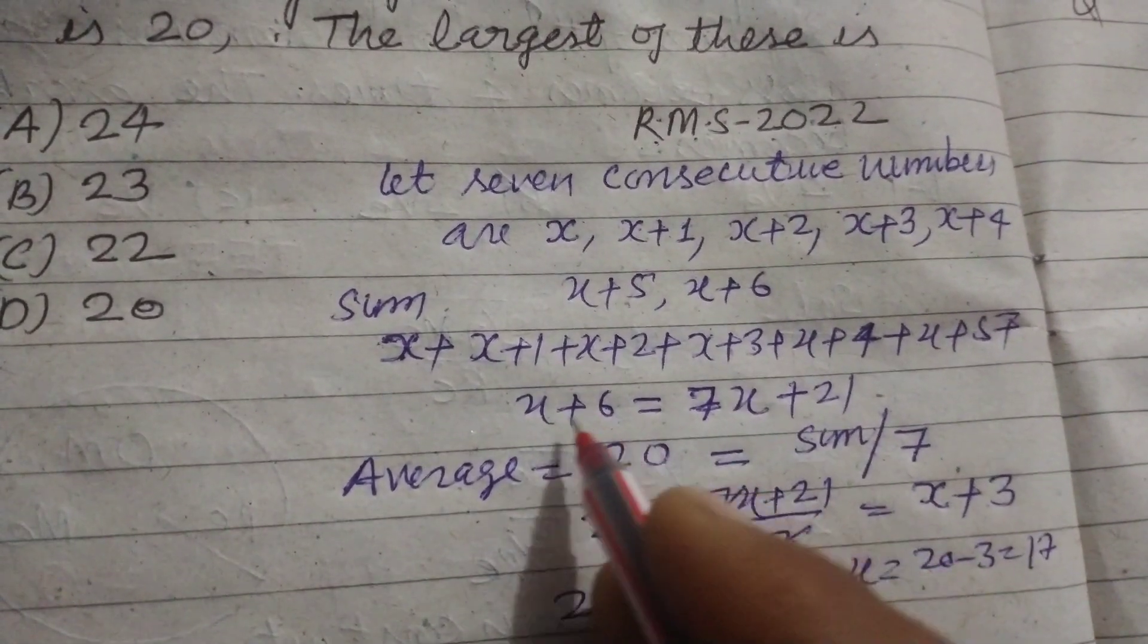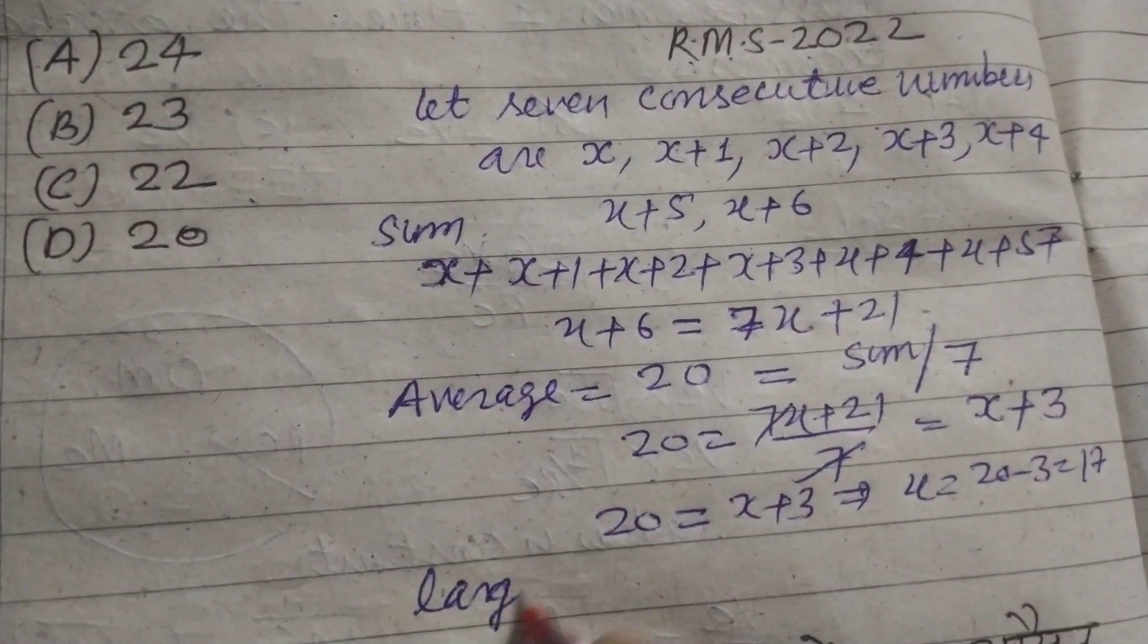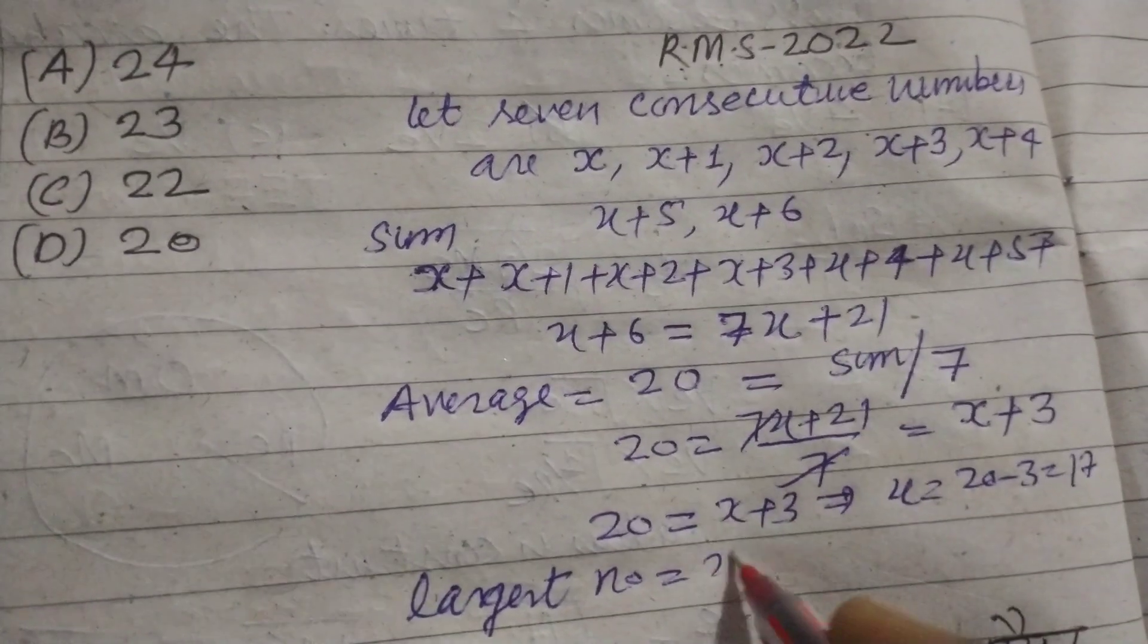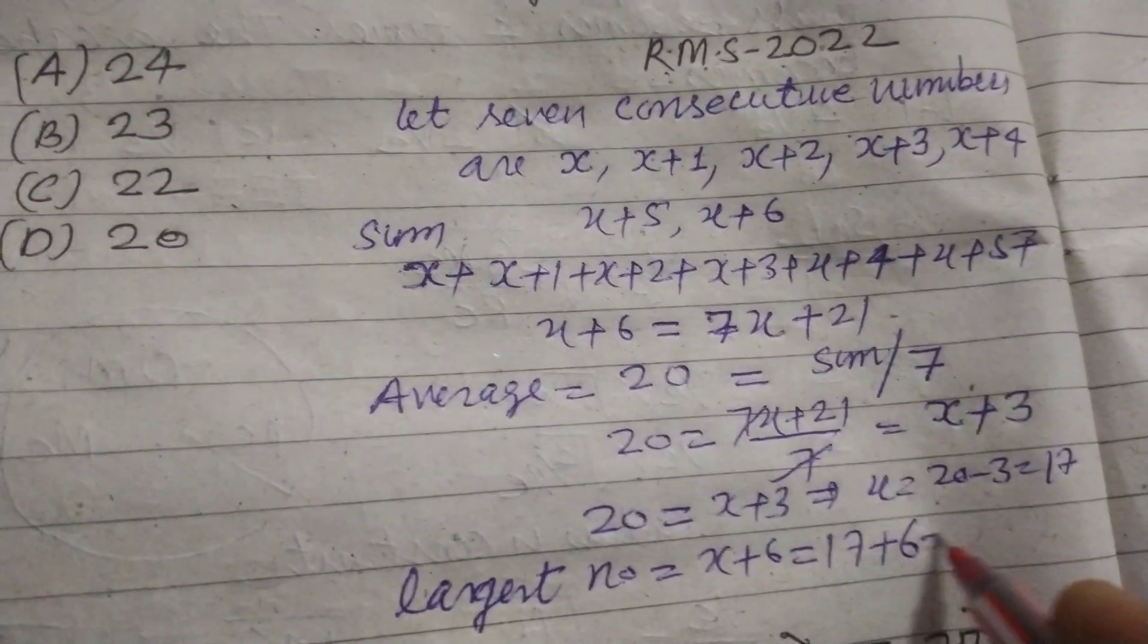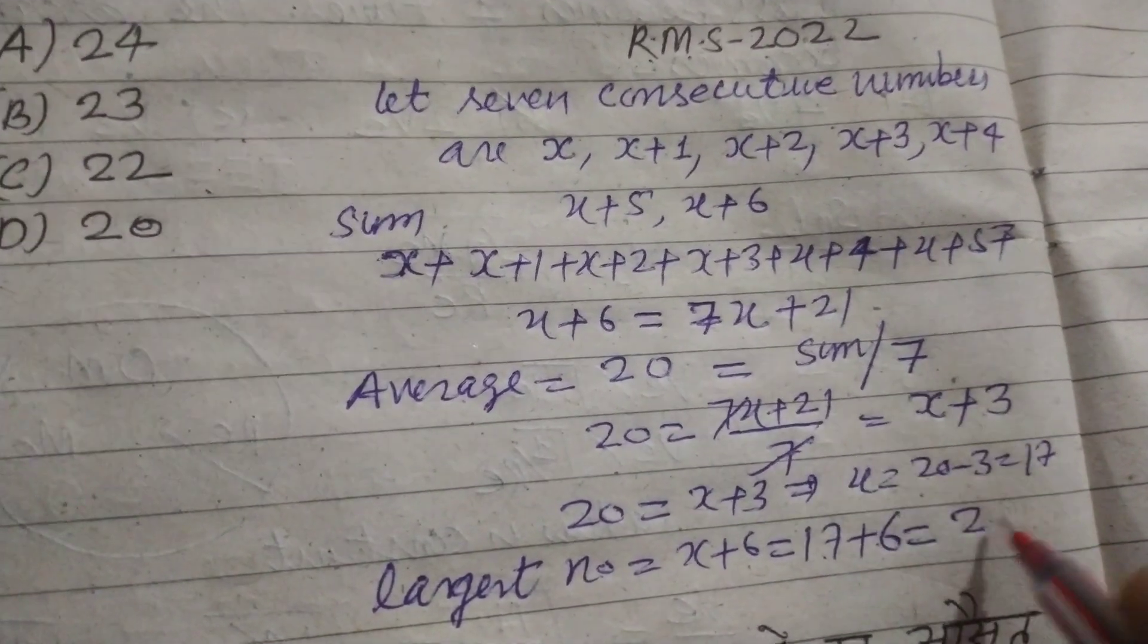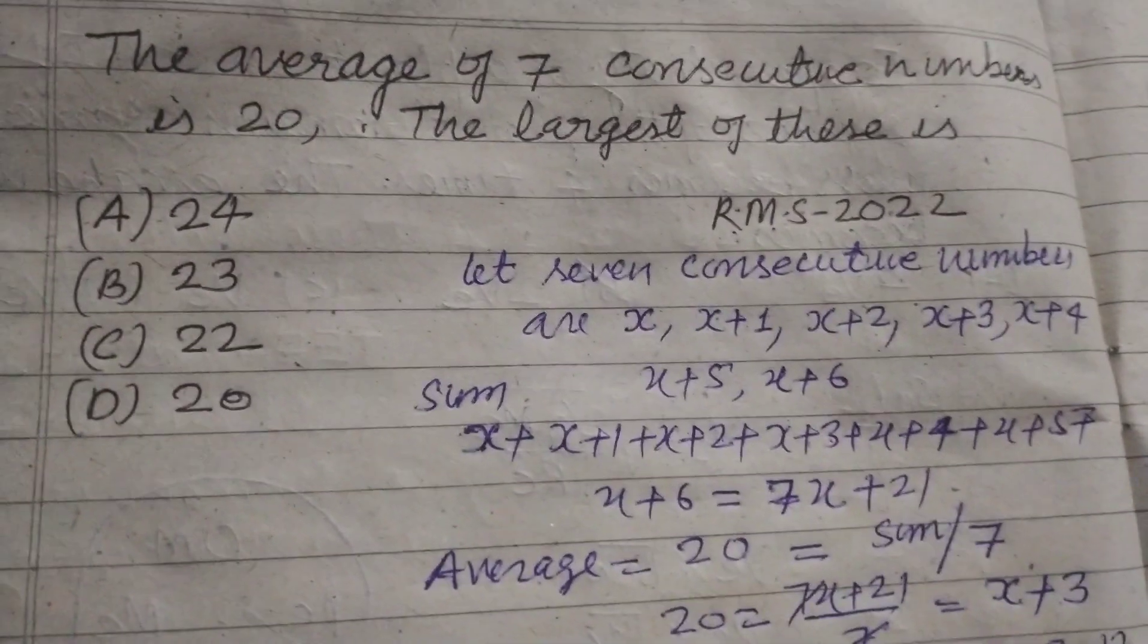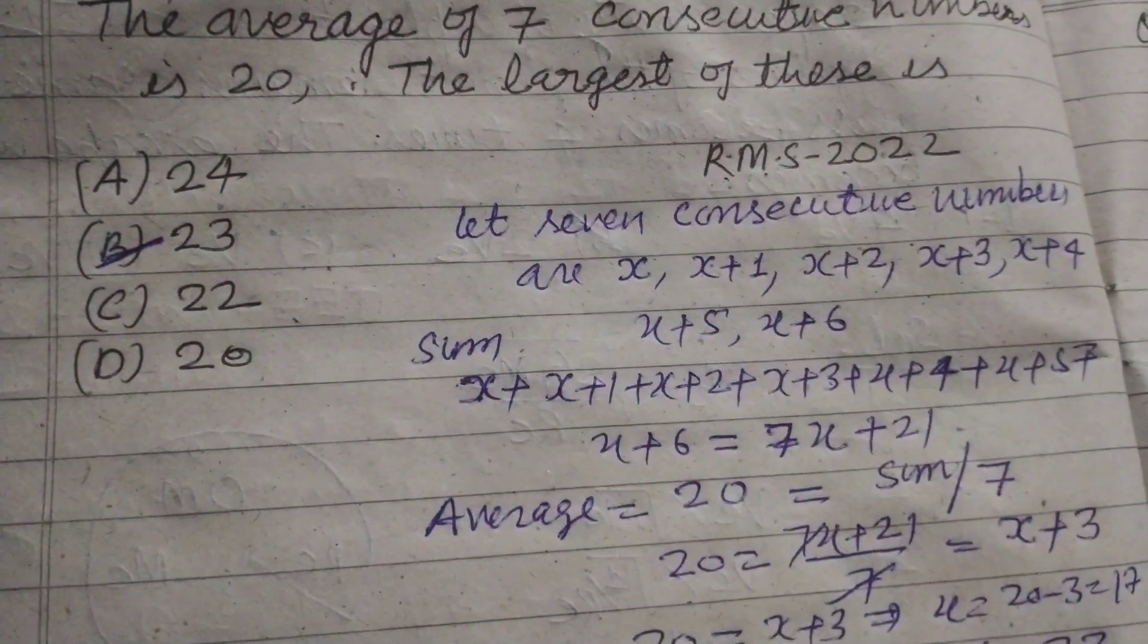The largest number is x + 6. So we calculate 17 + 6, which equals 23. Therefore, 23 is the largest number.